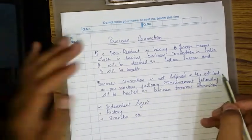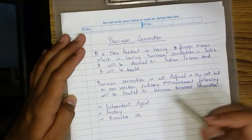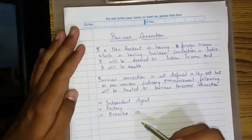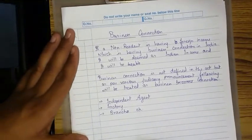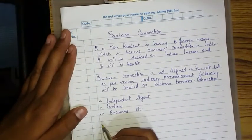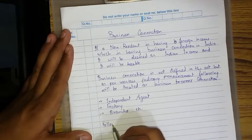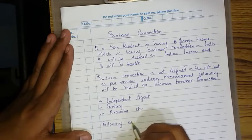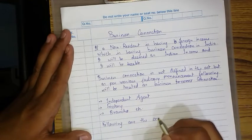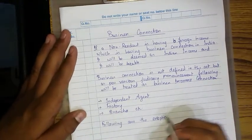Business connection is not defined in the act, but as per various judicial pronouncements, the following will be treated as business connection: independent agent, factory, or branch, etc.